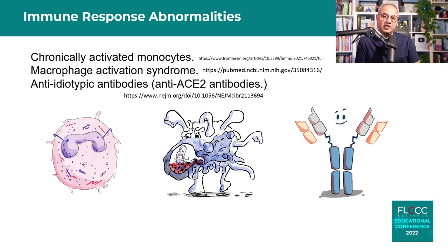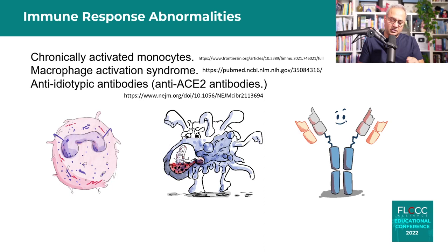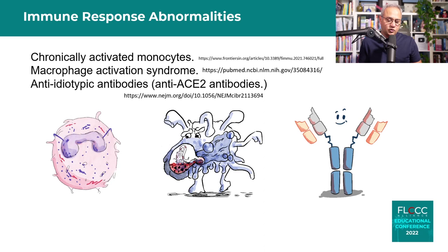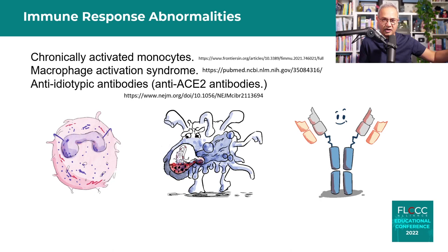When spike protein persists and is available, immune response abnormalities occur. Chronically activated monocytes — with spike protein present inside them — remain active for up to 15 months, causing ongoing inflammation. Macrophage activation syndrome is also a problem; Dr. Paul Marik had presented the MathPlus protocol early in 2020 to address this. Macrophages become dysregulated when they encounter spike protein as an antigen.